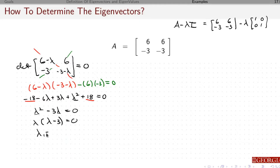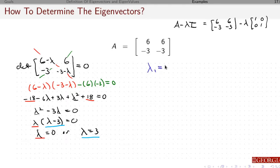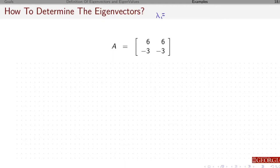This says lambda equals 0 or lambda equals 3. If I'm taking the product of two things, either one can be 0. So if that second thing is 0, lambda is 3; if the first thing is 0, lambda has to be 0. So I'm going to say lambda 1 is 3 and lambda 2 is 0 — that's just an arbitrary ordering. I've got lambda 1 is 3, lambda 2 is 0, and I want to find the eigenspaces associated with lambda 1 and lambda 2.